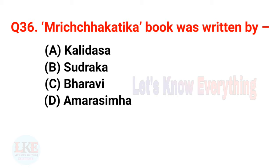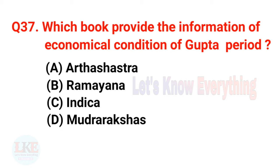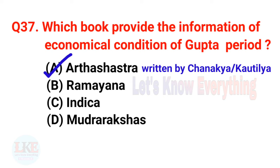Question 36: The book Mricchakatika was written by Shudraka. Question 37: Which book provides information on the economic condition of the Gupta period? Right answer: option A — Arthashastra, which was written by Chanakya, also known as Kautilya.